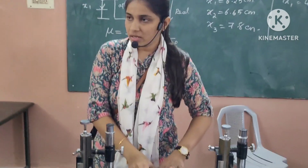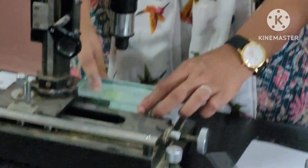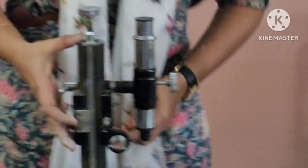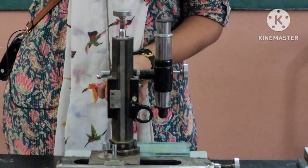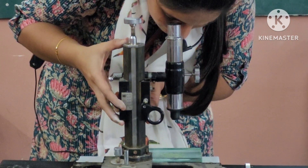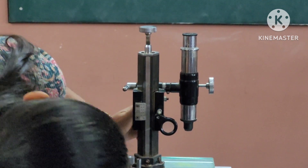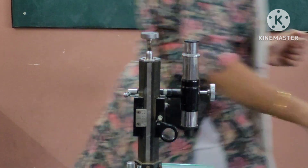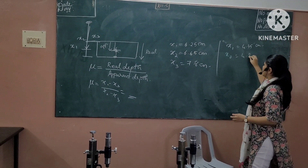Next step — I have to place the glass slab on top of the lycopodium powder. Should I adjust the eyepiece? No. I have to loosen this up and lift it. You will only go upwards because the depth is decreasing. Once again, you adjust it. At this point, I am getting a clear image — you tighten it up and then measure the reading. I am getting 4.8. So X2 is equal to 4.8 centimeter.